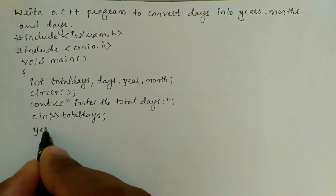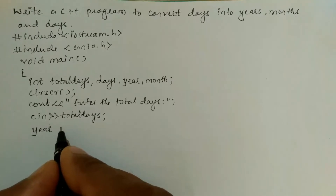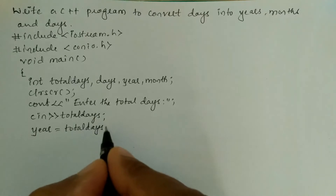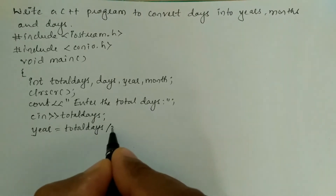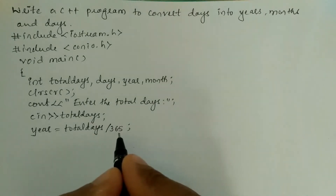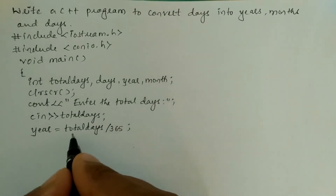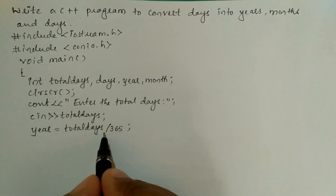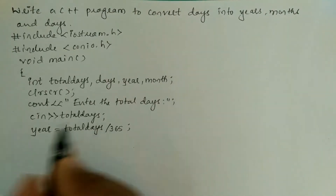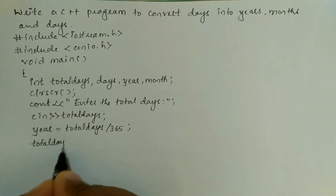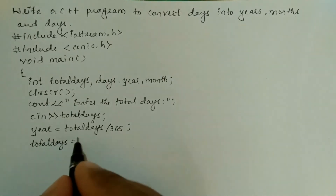Now we are going to calculate the number of years present in the total days. Here I write: year = total_days / 365; because in a year we have 365 days. Using the forward slash indicates integer division, which always returns the quotient.